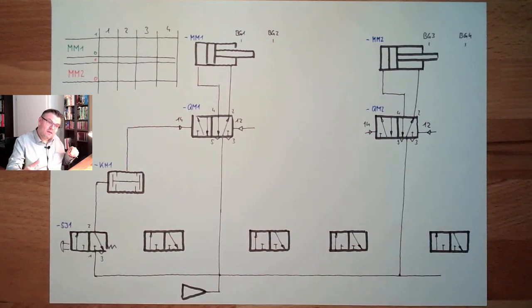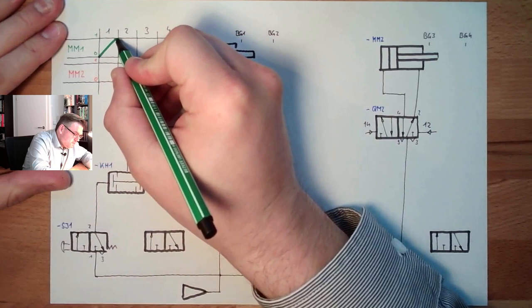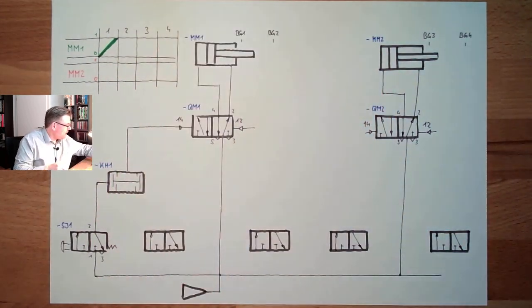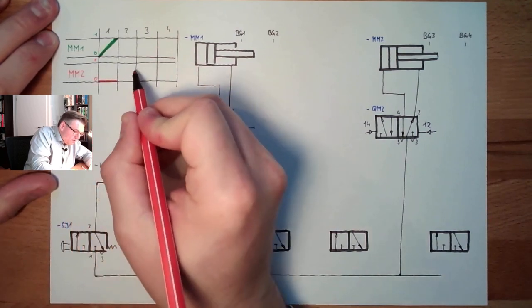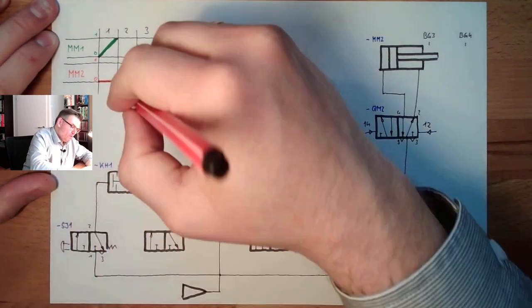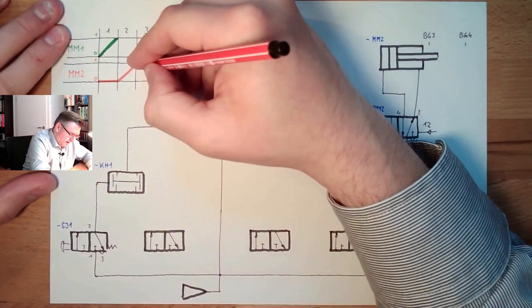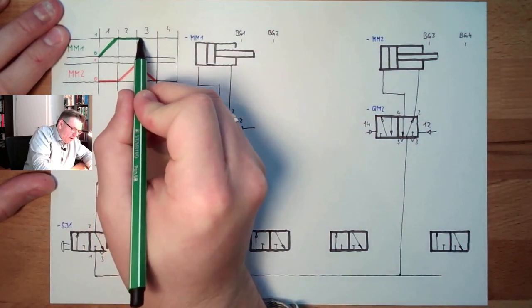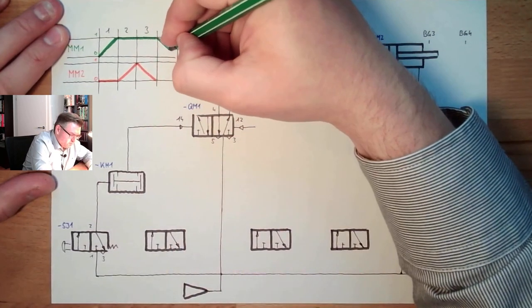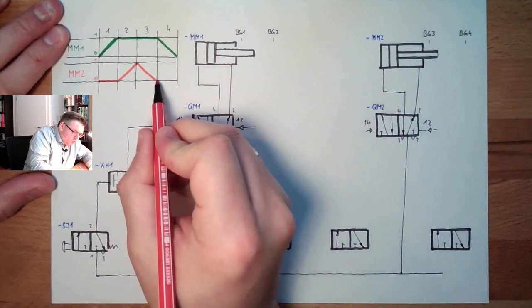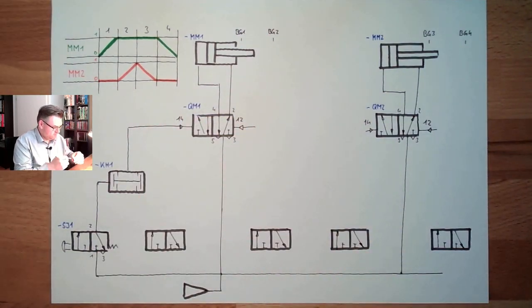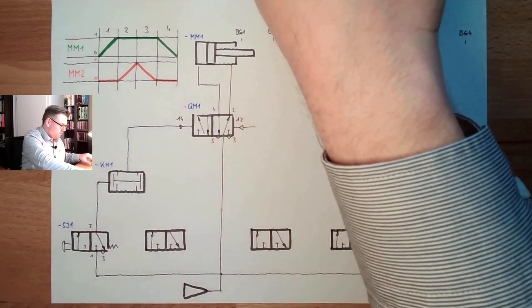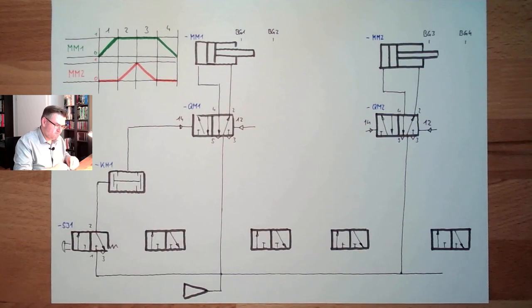And after this, the clamp shall also be released. So first, we clamp. After it is clamped, we do something. Emboss or, doesn't really matter. Then we are finished drilling, embossing, punching, whatever. Until this time, this is clamped and then we are releasing also. So I want to do this movement of cylinders. This would be the goal.